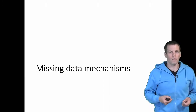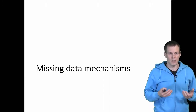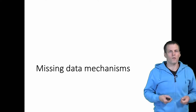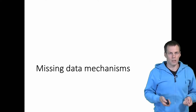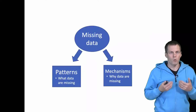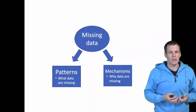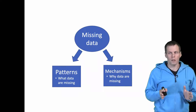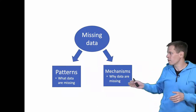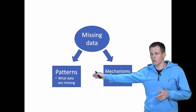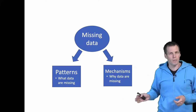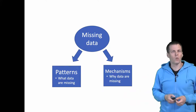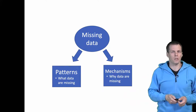Missing data mechanism refers to the process that generates the missing data. It answers the question of why the missing data are missing. When we deal with missing data, there are two things that we need to consider: there's the pattern — what data are missing — and then there's the mechanism — why the data are missing.